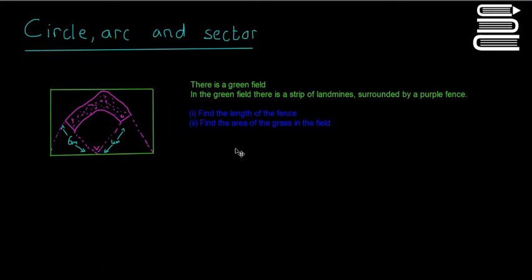This is going to be one of the first problem solving questions we've attempted in area and volume. It's going to be on the circle, arc and sector. The reason it's a real problem solving question is they just give you a picture and some words, and you have to think of all the different shapes and figure it all out yourself. It's not as simple as just sticking things into a formula — you have to think for yourself.